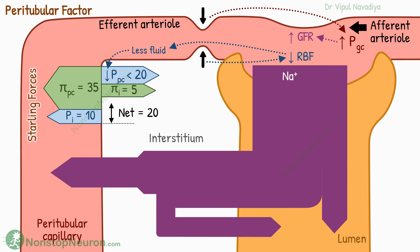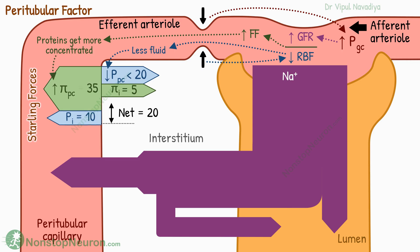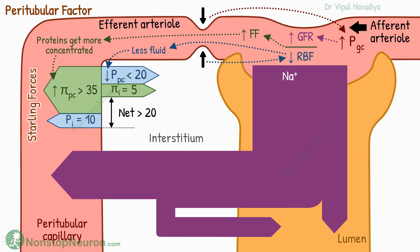Second, an increase in GFR and a decrease in renal blood flow increases the filtration fraction — that is, how much of the incoming plasma is filtered at the glomerulus. With a higher filtration fraction, proteins get more concentrated in the glomerulus, so colloid osmotic pressure in the capillary rises. These two changes increase the net driving pressure above 20 mmHg, so more sodium enters the capillary and less leaks back into the tubule. Thus the effect of increased GFR on final excretion is counteracted.